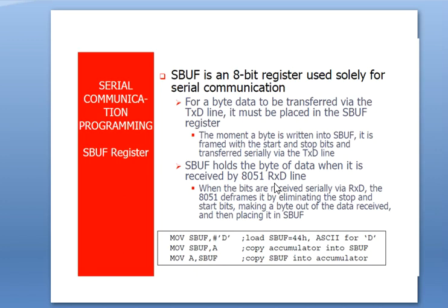For transmission, TXD line is used; for reception, RXD line is used. When bits are received serially via RXD, the 8051 de-frames them by eliminating the stop and start bits to form a byte, then places it in SBUF. The instructions are: MOV SBUF, #'D' to load a value into SBUF for transmission; MOV SBUF, A to load the accumulator content into SBUF; and MOV A, SBUF to read received data into the accumulator.